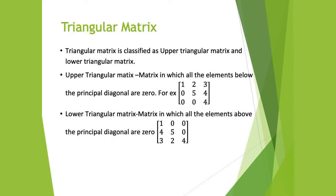Now we come to the triangular matrix. Triangular matrix is of two types: upper triangular matrix and lower triangular matrix. In the upper triangular matrix, all elements below the principal diagonal are 0. Here, 1, 5, 4 is the principal diagonal and all elements below this principal diagonal are 0. There is no restriction on elements above the principal diagonal — they can be 0 or non-zero. The only restriction is that all elements below the principal diagonal must be equal to 0.